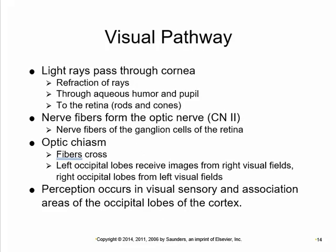Light passes through the cornea — refracting slightly — through the aqueous humor, through the pupil, then through the lens where it refracts more, through the vitreous humor, and then affects the rods and cones on the retina. They interact with neurons of the optic nerve — cranial nerve 2. The optic nerves go back to the brain where they meet at the optic chiasm. Some fibers cross, going to each occipital lobe. Perception happens in the association areas of the occipital lobe.